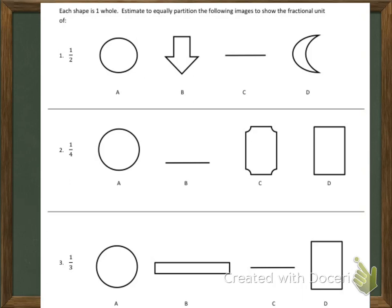This is a page straight from our homework. Each shape is one whole. Estimate to equally partition the following images to show the fractional unit. The first one is one half. This bottom number tells us how many fractional units are in our shape.